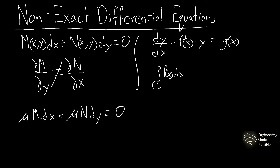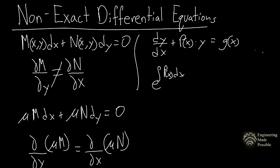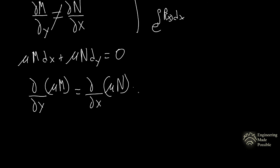So you have mu·M dx plus mu·N dy, such that the partial derivative with respect to y of mu·M equals the partial derivative with respect to x of mu·N, which will in fact make it exact. Once you have it in the form of an exact equation, you're able to utilize the method used previously to solve the differential equation.